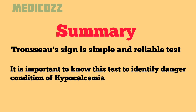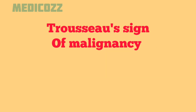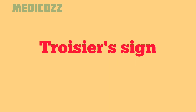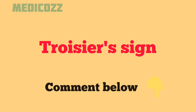At the end of this video, I would like to add another Trousseau's sign — Trousseau's sign for malignancy, which refers to migratory thrombophlebitis. It is commonly seen in carcinoma of the pancreas. There is another entity called Trousseau's sign — I would like you to write about it in the comment section below.